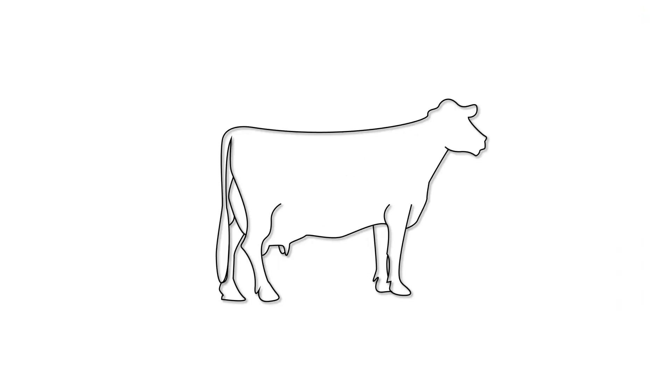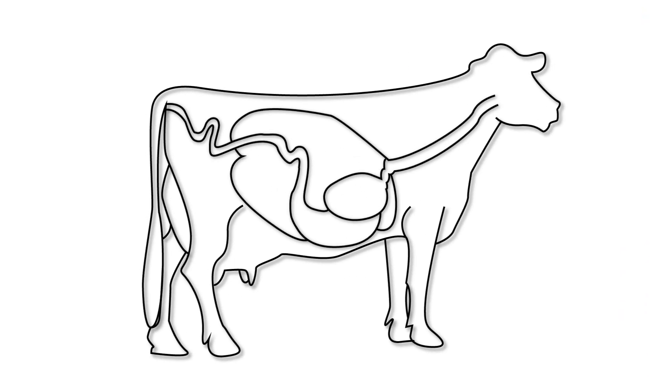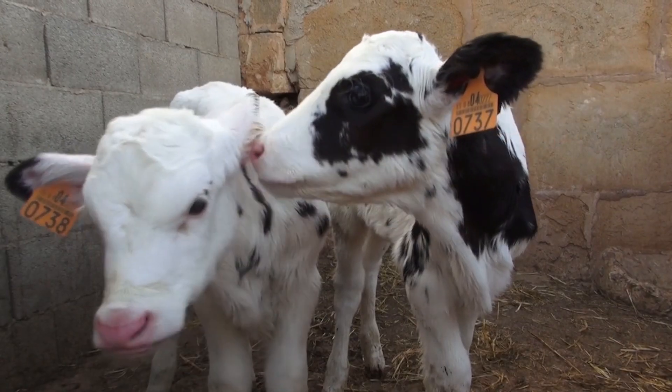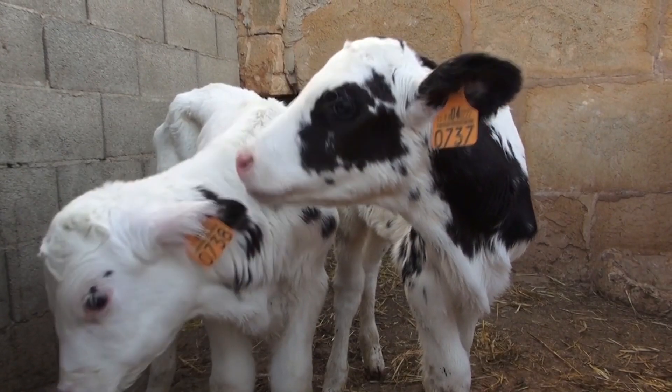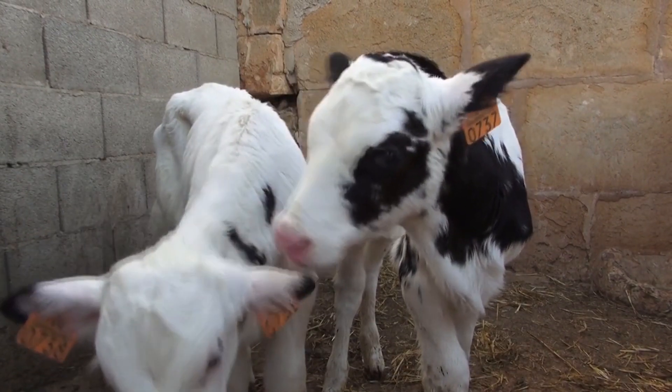Next, we will talk about diseases that are spread through the fecal-oral route. The first is cryptosporidium. Crypto is a common disease caused by a protozoa in the cow's intestinal tract. Crypto will be more common in calves than in mature cattle.